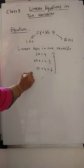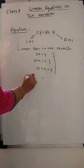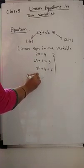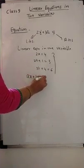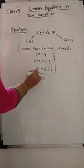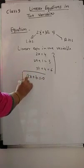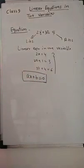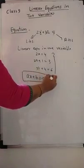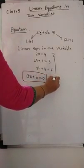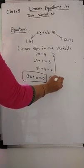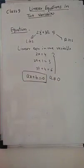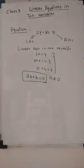The general form of a Linear Equation in one variable is: ax plus b is equal to 0. This is the general form of a Linear Equation in one variable, where a should not be equal to 0.